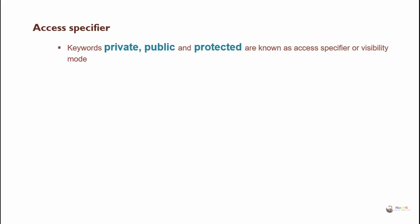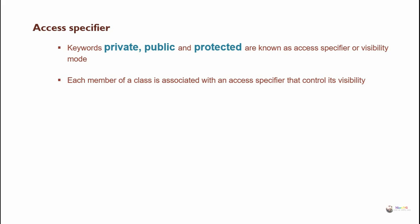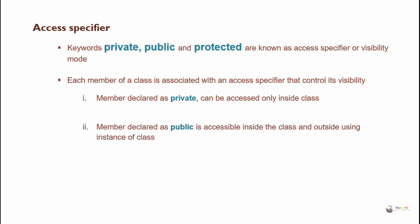The class access specifiers: the keywords private, public, and protected are known as access specifiers or visibility modes. Each member of a class is associated with an access specifier that controls its visibility. A member declared as private can be accessed only inside the class. A member declared as public is accessible inside the class and outside using an instance of a class.